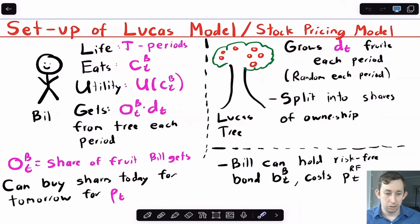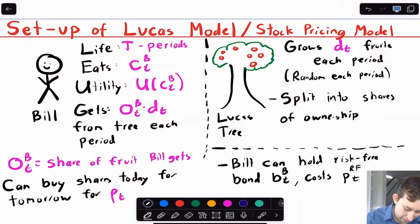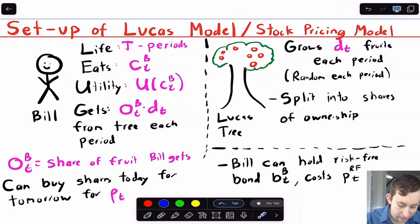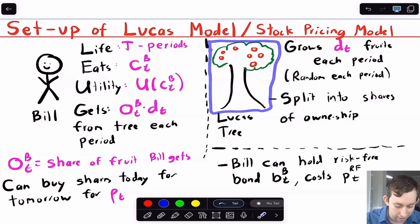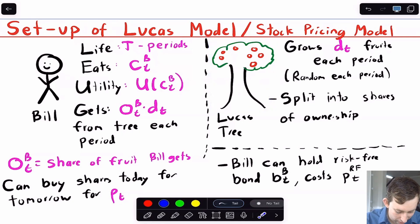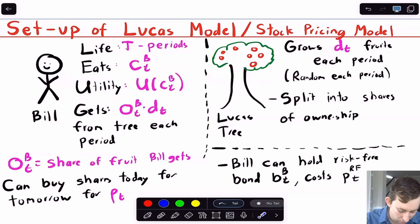Here is the Lucas Tree setup. We're going to have a representative agent, and per usual, our representative agent is going to be Bill. Bill is going to live for T periods — it could be infinity, but for now we'll just say T. He gets to consume a certain amount of coconuts in every period, that's going to be C_T^B. He's going to have a utility. And what he's going to get is a certain share of coconuts from this coconut tree. So this Lucas Tree is going to be a coconut tree — it looks nothing like a coconut tree, but I promise it is indeed a coconut tree in some world where coconuts are red. And this right here is just going to be the share of coconuts of the tree that Bill gets.